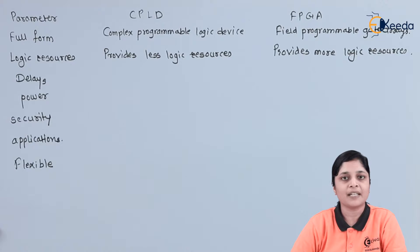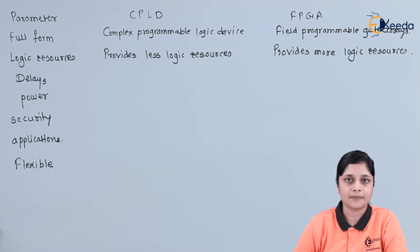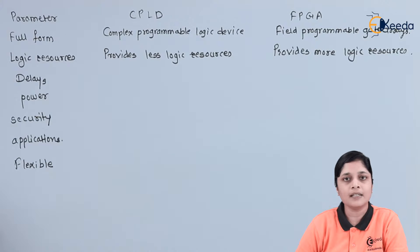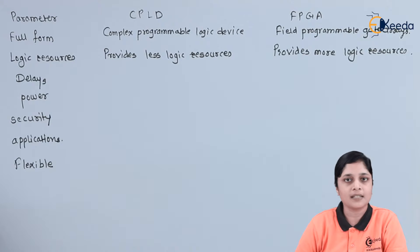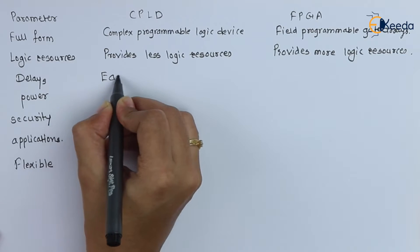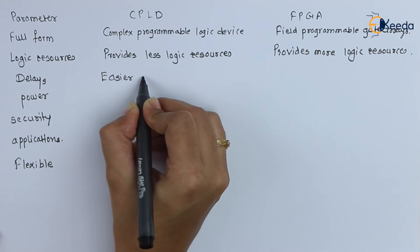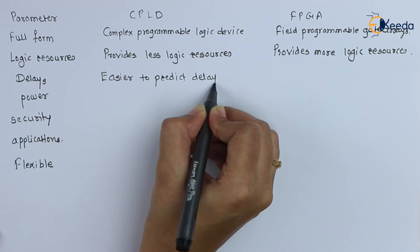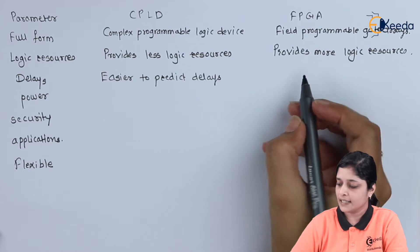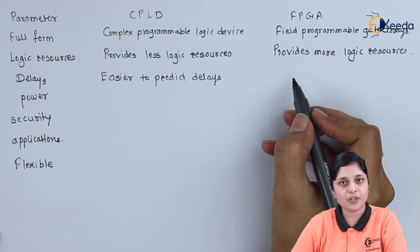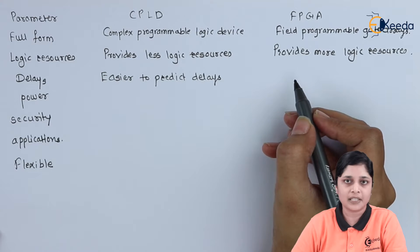The next parameter is delays. In CPLD it is easy to predict the delays while designing the circuit, and in FPGA it is difficult to predict the delays.